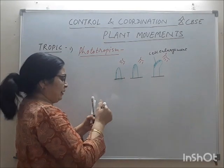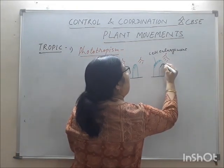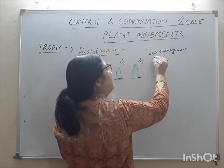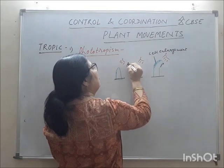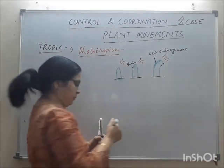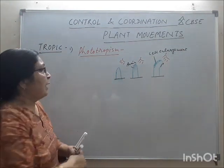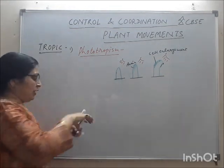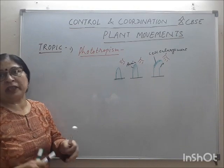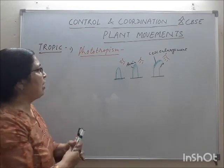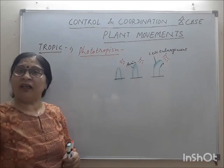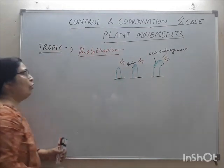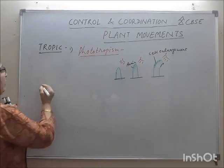Due to auxin in the shaded part, cell enlargement occurs on that side, so the plant bends a little. Here the same side remains unchanged, only where cell enlargement happens due to auxin does it bend towards the light. So the movement of parts of a plant towards the light is known as phototropism. A good example is the sunflower — it moves towards the sunlight.